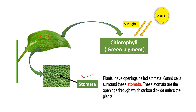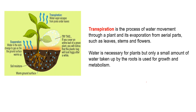The water loss through these pores has a special mechanism called transpiration. Transpiration is the process of water movement through a plant and its evaporation from aerial parts such as leaves, stems, and flowers. Water is necessary for plants, but only a very small amount of water taken up by the roots is used for growth and metabolism. The rest of the water is evaporated from aerial parts such as leaves, stems, and flowers.